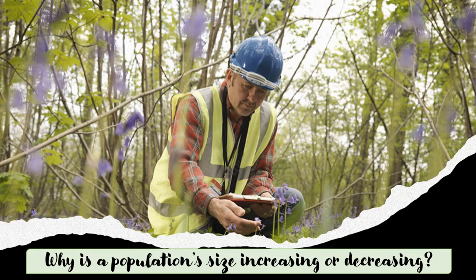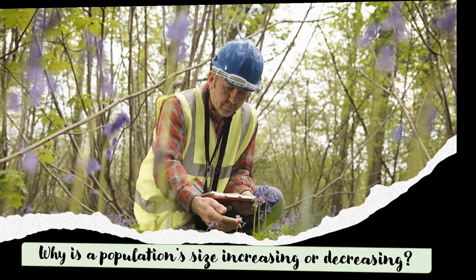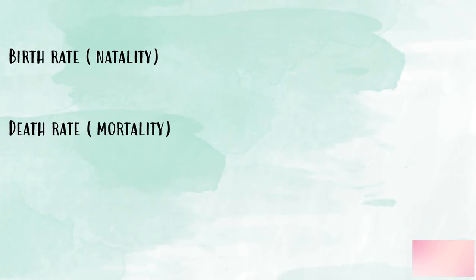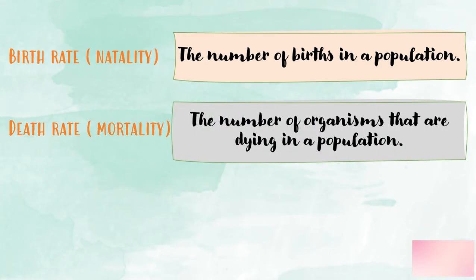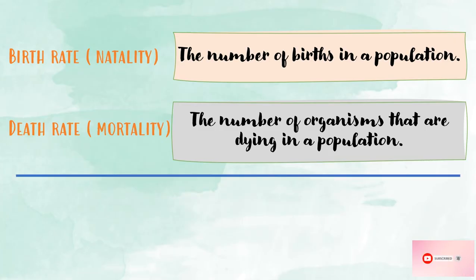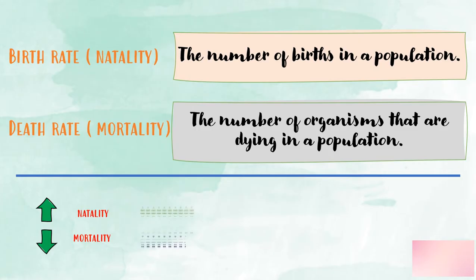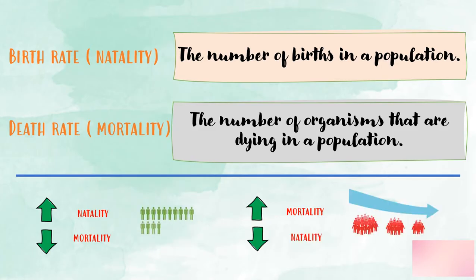There are many factors why population size changes. Any population — whether humans, animals, mold growing on bread, or bacteria in your intestine — will grow if more organisms are being born than are dying. Birth rate or natality refers to the number of births in a population, while death rate or mortality is the number of organisms dying. If birth rate is greater than death rate, the population will grow; if death rate is greater, the population will decrease.